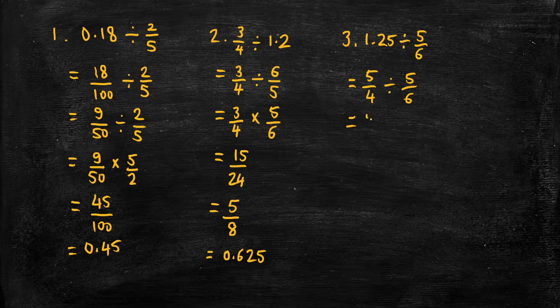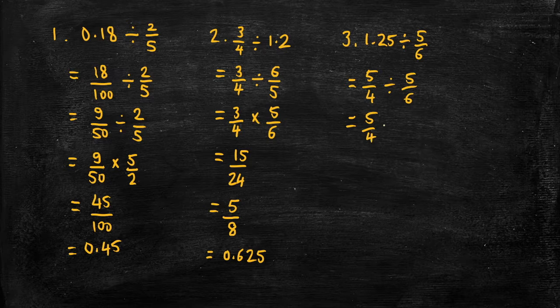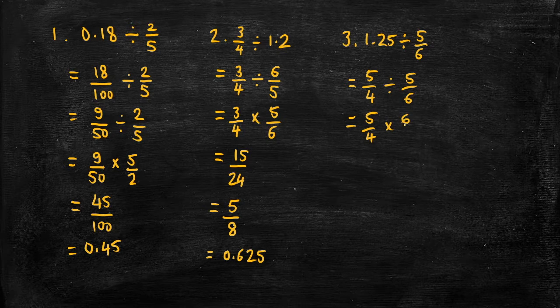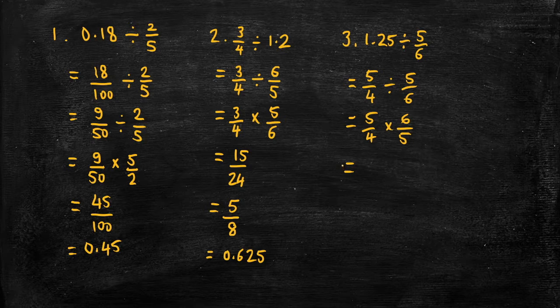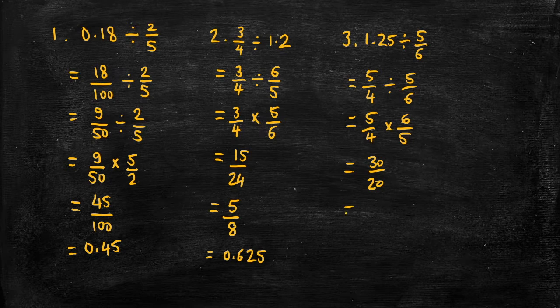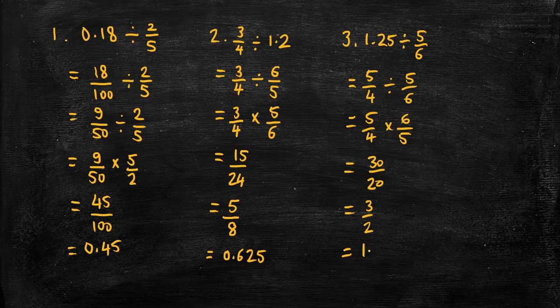Let's apply keep change flip. And then multiply the numerators, multiply the denominators and then simplify and then express as a decimal. So 1.5.